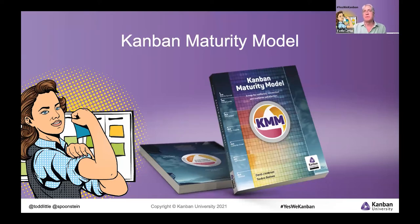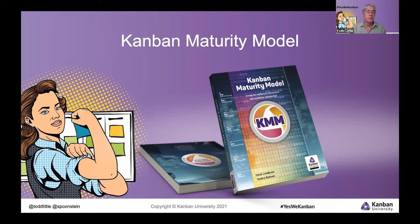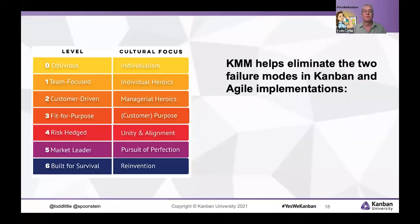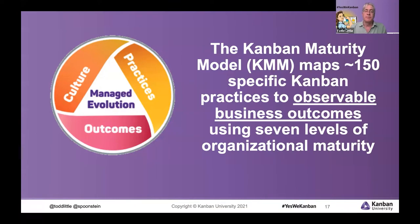This is where the Kanban Maturity Model comes in — the roadmap to evolutionary change. This is work done by David Anderson and Theodore Bozo, who first published a book a few years back with a second edition now available. It codifies approximately 150 Kanban practices observed over the past 10 years, and how those practices are used in varying degrees of maturity within organizations. We focus on observable outcomes — a combination of culture and practices — to understand what the next appropriate practices are given the level of maturity within the organization.